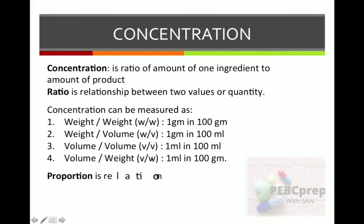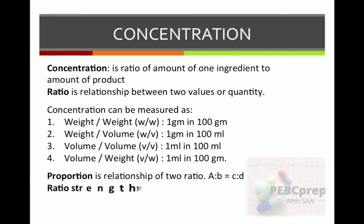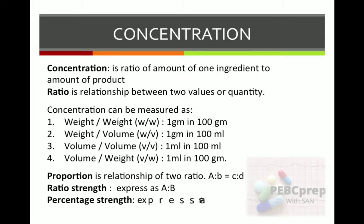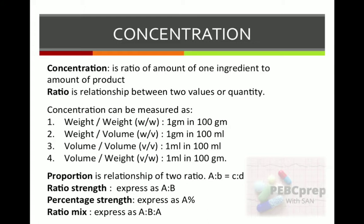Other terms: proportion is the relationship of two ratios — A is to B equals C is to D. Another term is ratio strength: when two values are expressed in the form A is to B or C is to D, this is called ratio strength. When ratio strength is expressed as a percent, it is called percentage strength.